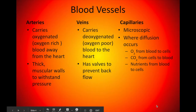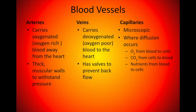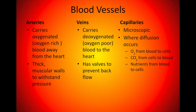You have three different types of blood vessels. Arteries carry oxygen-rich blood away from the heart — remember: arteries, away, both start with A. They have thick muscular walls to withstand the pressure because the heart is pumping the blood pretty fast, so the arteries have to be thick so they don't accidentally burst. Veins carry deoxygenated or oxygen-poor blood back to the heart.